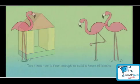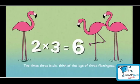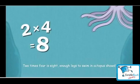Two times three is six, think of the legs of three flamingos. Two times four is eight, enough legs to swim in octopus shows.